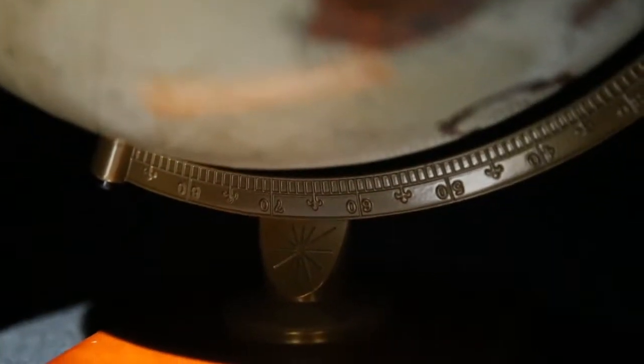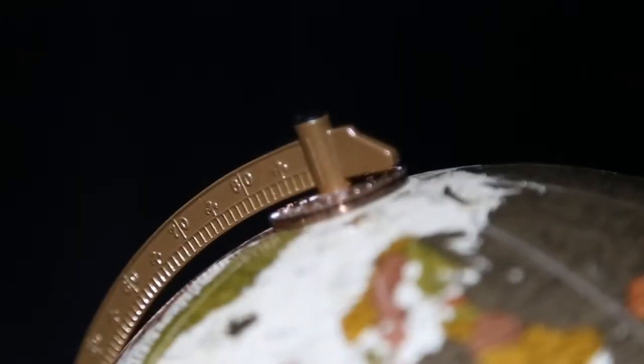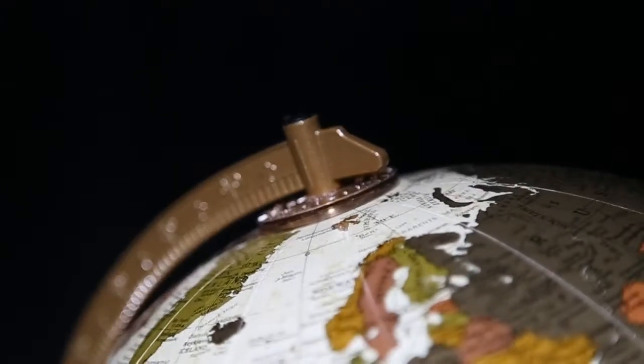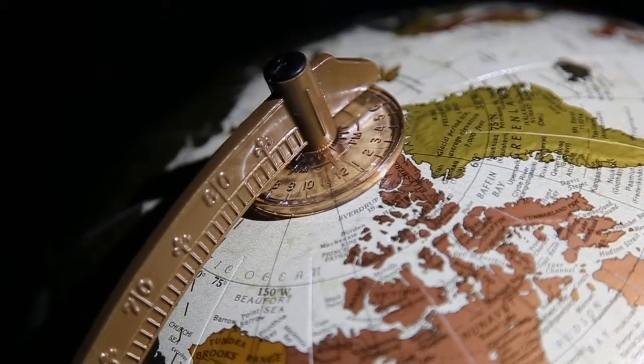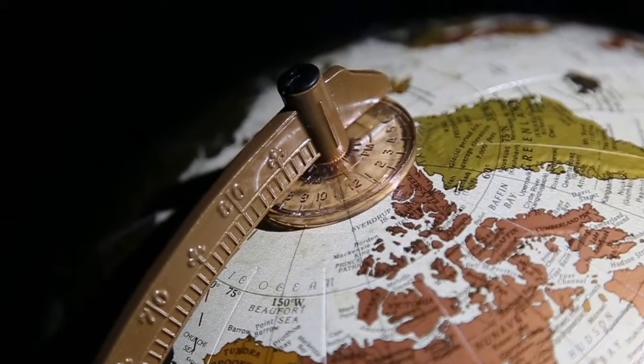The die-cast antique-plated semi-meridian is labeled with degree marks from the equator to the poles. A time dial located at the North Pole allows for comparisons of time zones around the world.